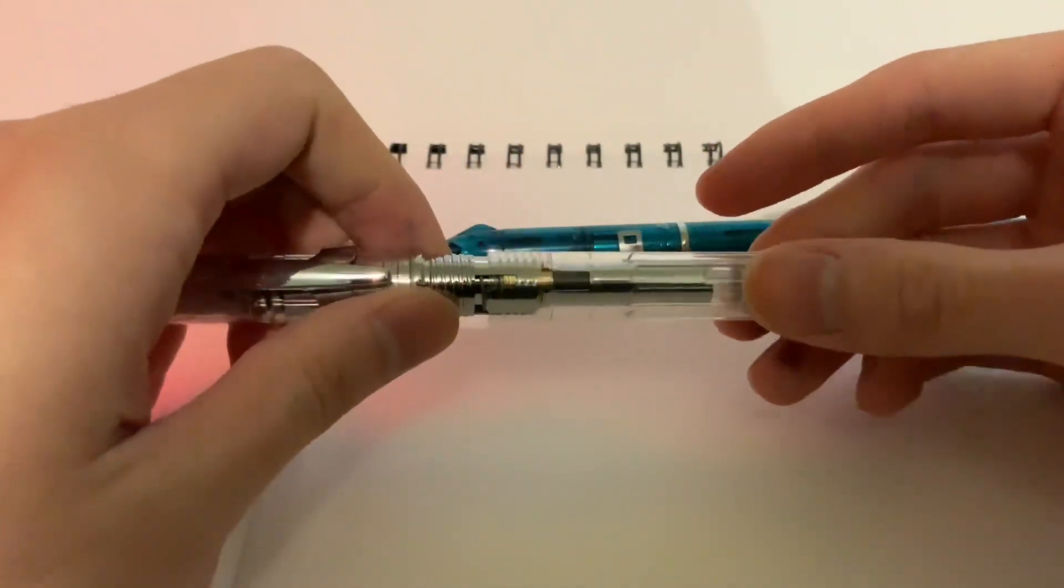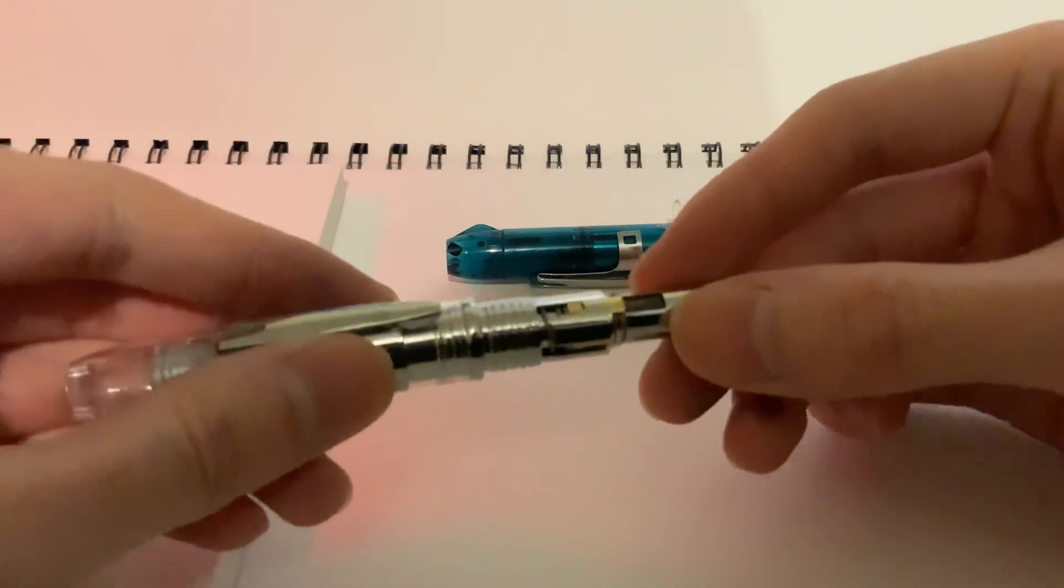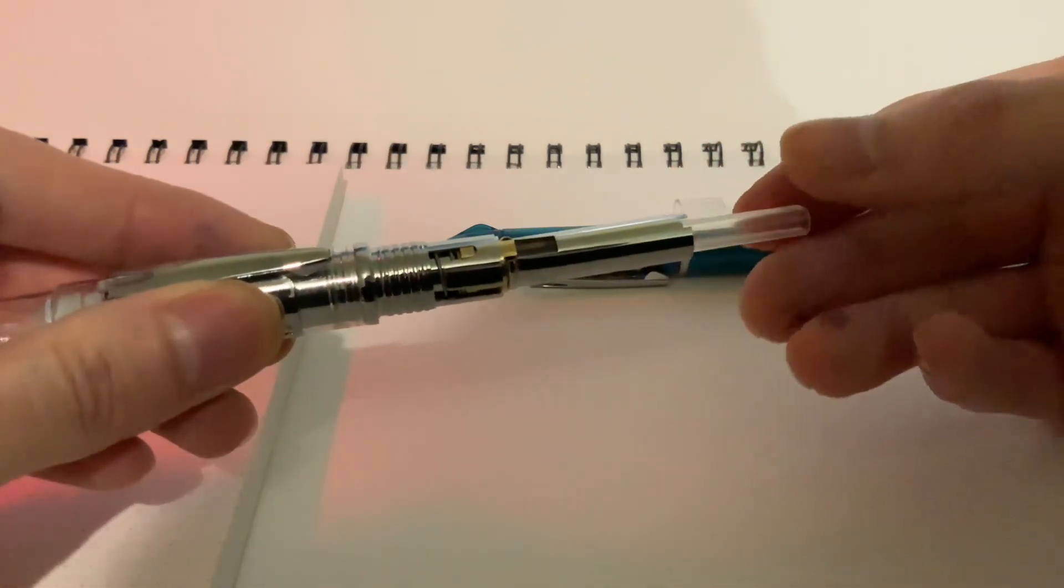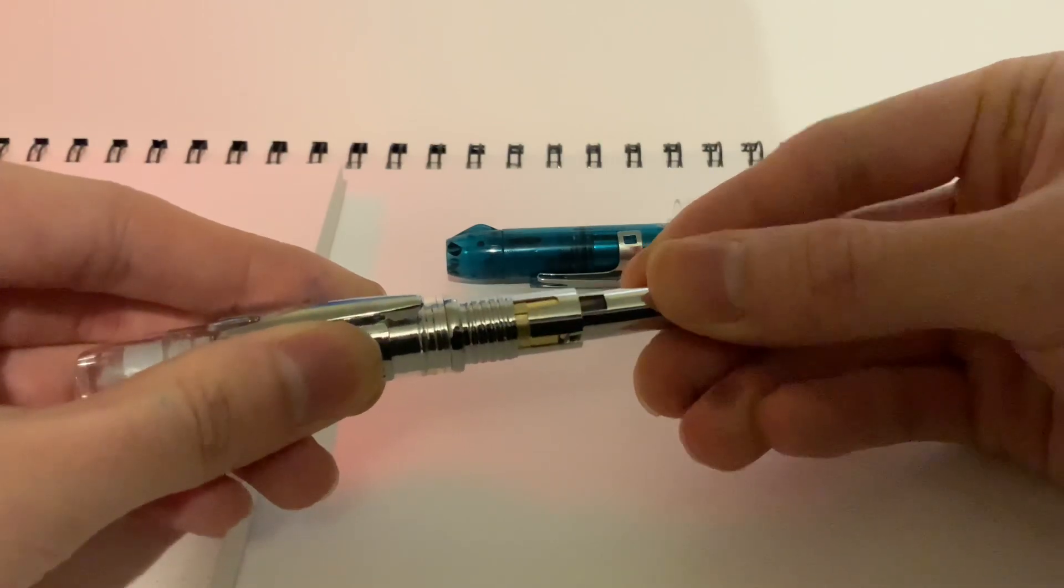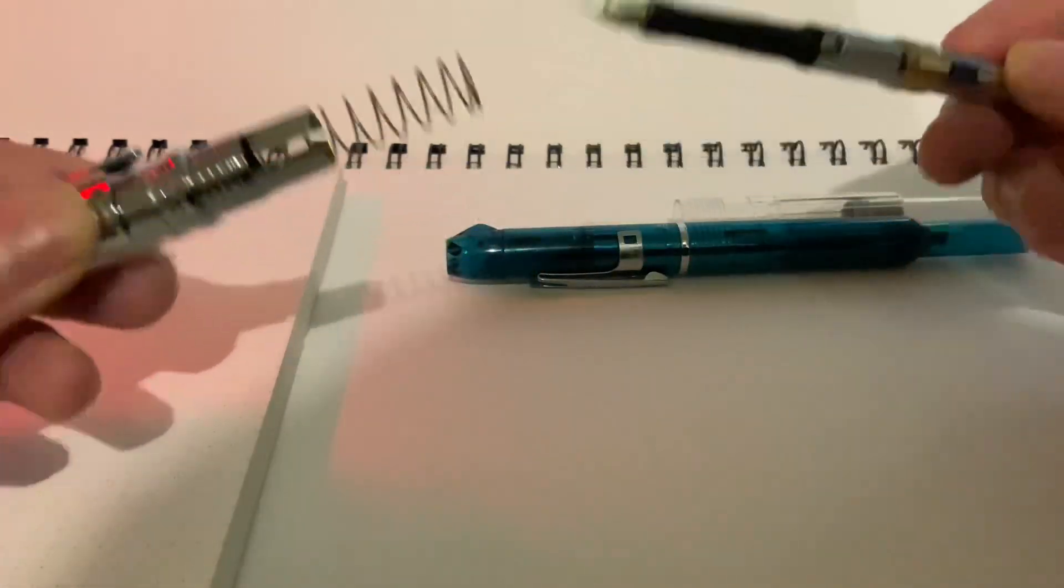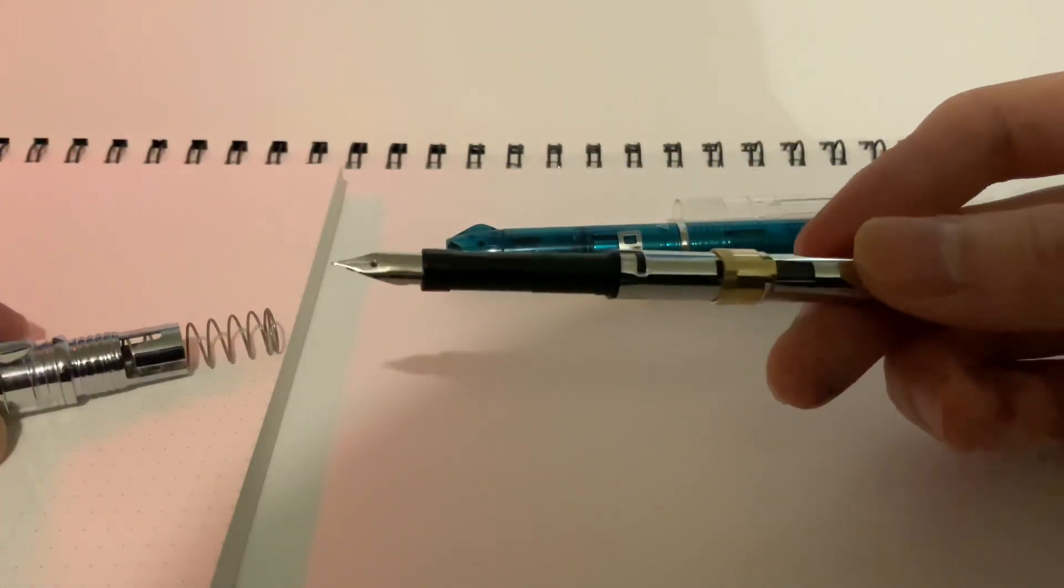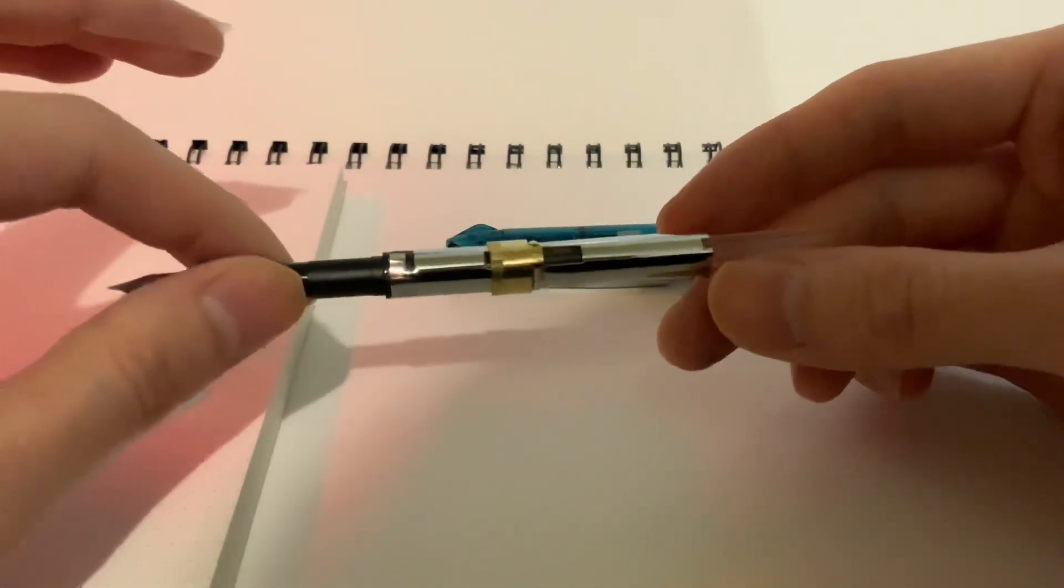So if we take the swivel type body off, over here you can see that there's this sort of nubbin in here. You push that down with that little square thing right there and turn that this way and pull this out. Then the actual nib feed and converter unit all comes out.